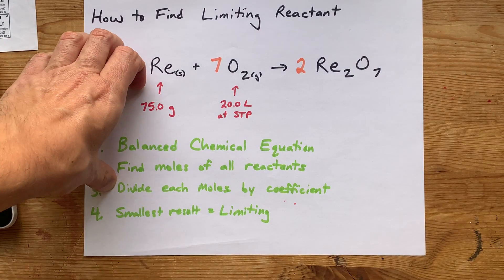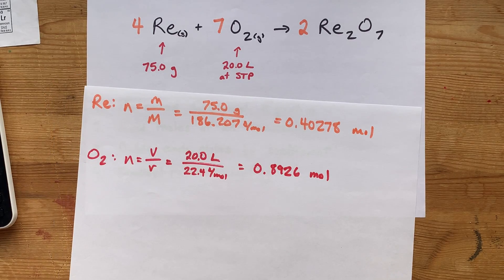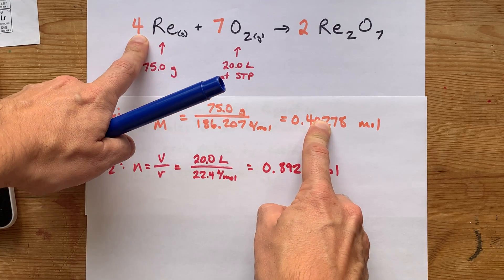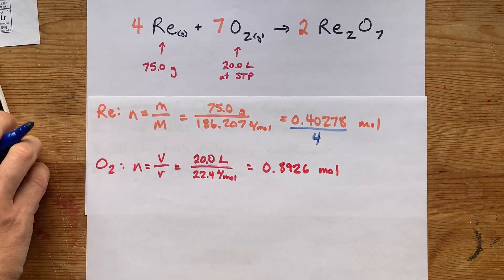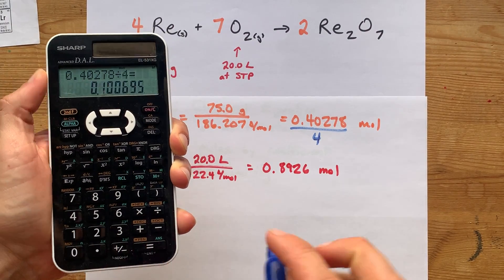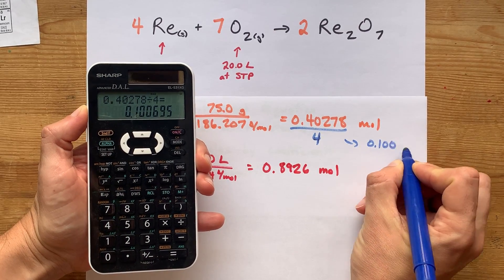Step three, divide each of those numbers of moles by the coefficient from the balanced chemical equation. So rhenium will get divided by 4. 0.40278 divided by 4 gives me 0.1007.